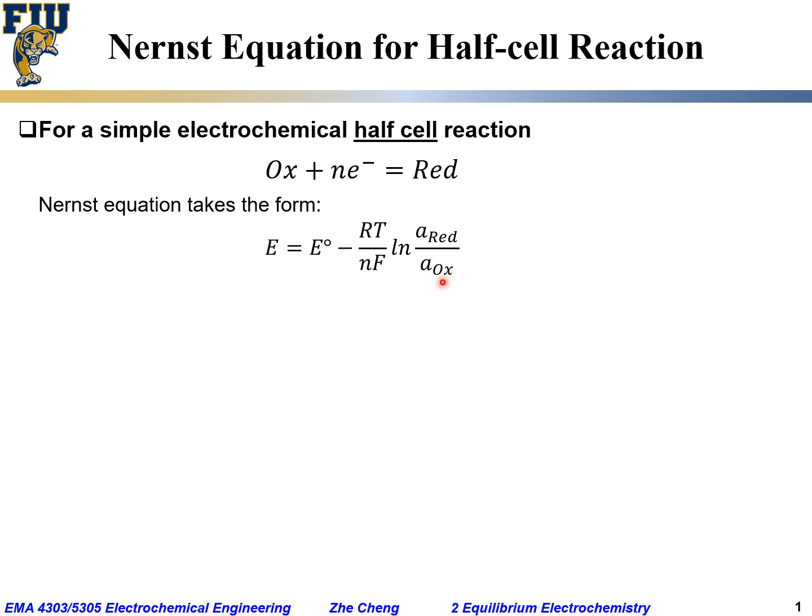Again, E would be the electrode potential versus, don't forget, SHE—standard hydrogen electrode—for this particular electrode reaction, or we can say for this redox pair, Ox or Red redox pair.